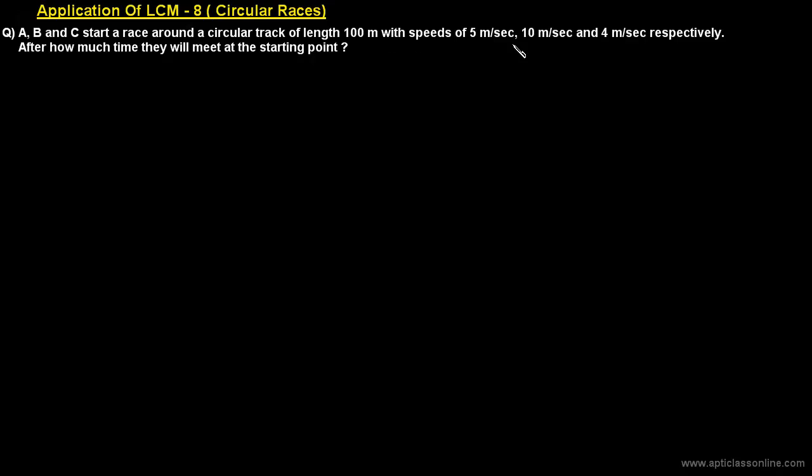In this class we will talk about the application of LCM as applied to circular races. We will understand this concept with the help of this example. A, B, and C start a race around a circular track of length 100 meters with speeds of 5 meters per second, 10 meters per second, and 4 meters per second respectively. After how much time will they meet at the starting point?